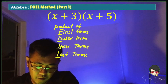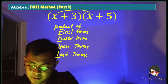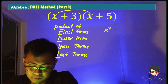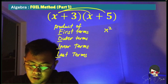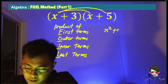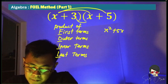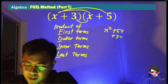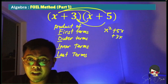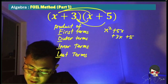So let's find the product. We have x times x, that is x squared. Then x times 5, that is 5x. Then 3 times x, that is 3x. And 3 times 5, that is 15.